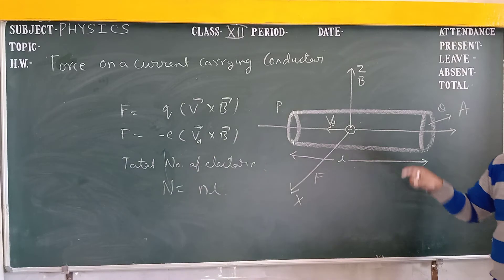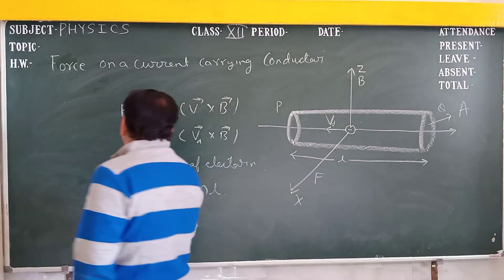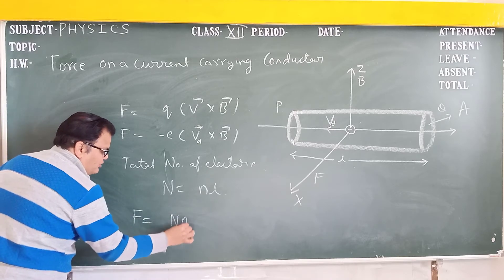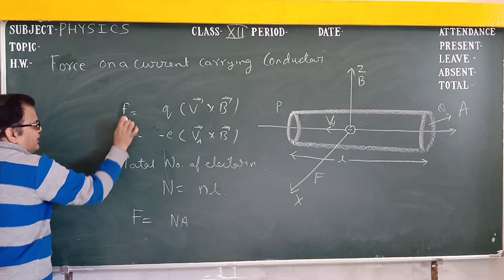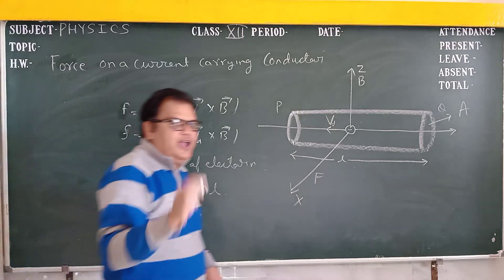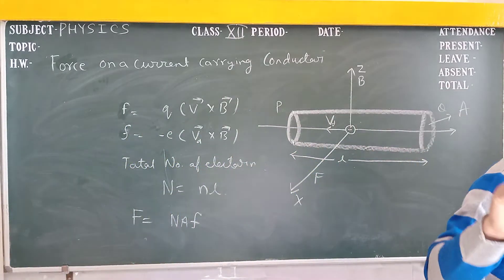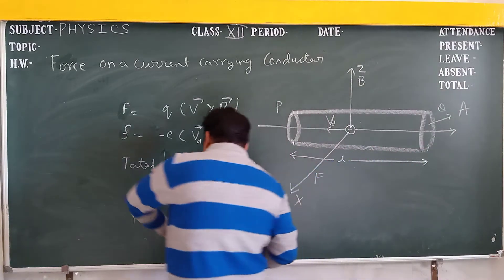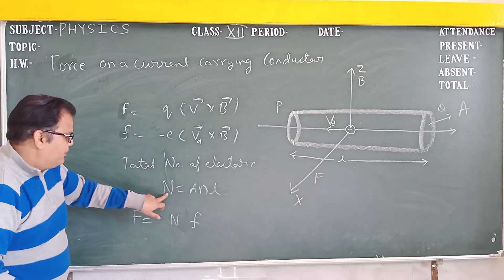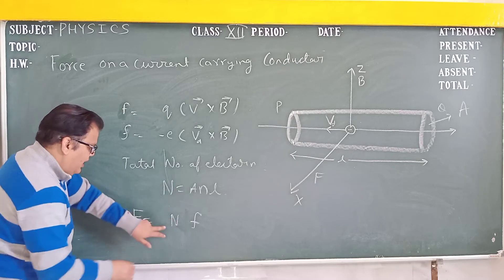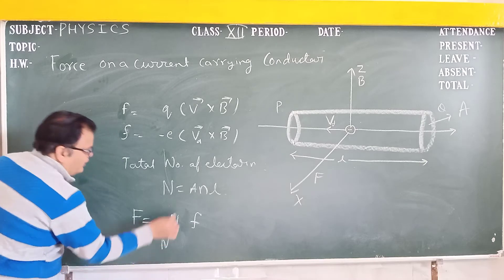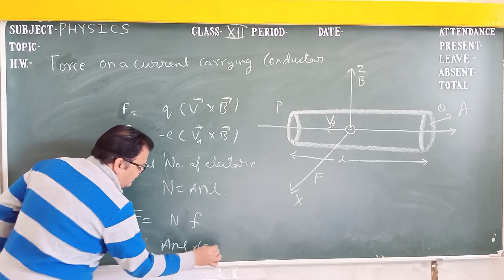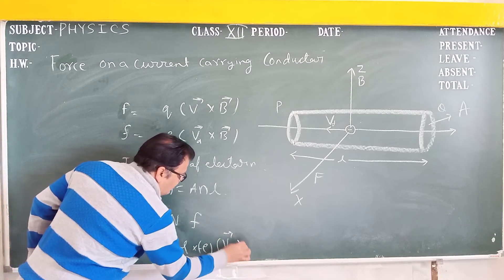The force acting on the charge particles of the conductor is F. Total force F equals capital N times the force on one electron. So F equal to n times A times L times minus e times VD cross B. The negative sign shows that we are considering the charge particle to be an electron, and e represents the negative charge.